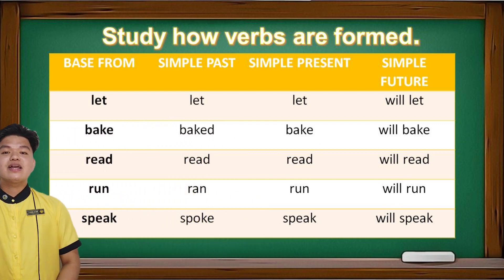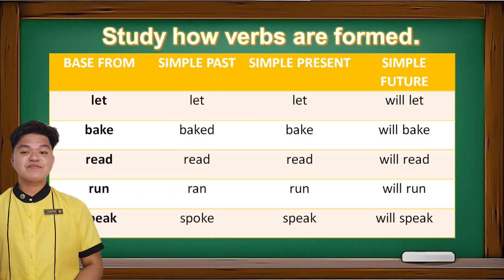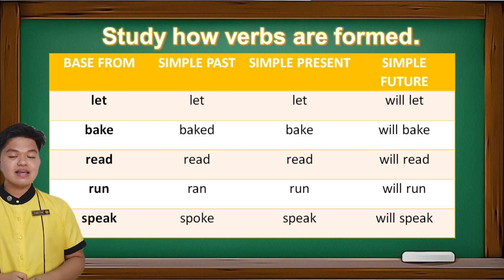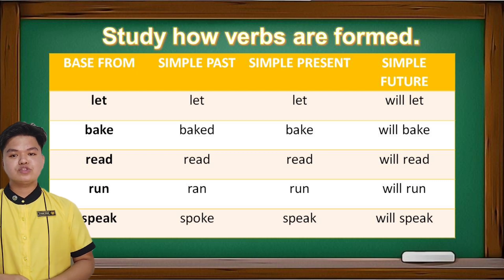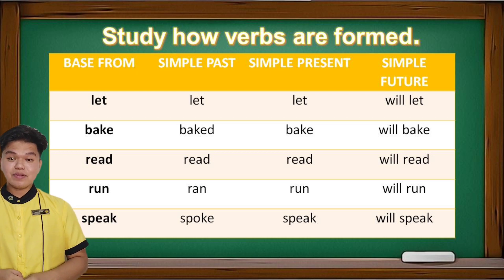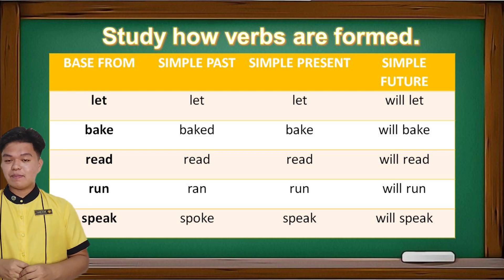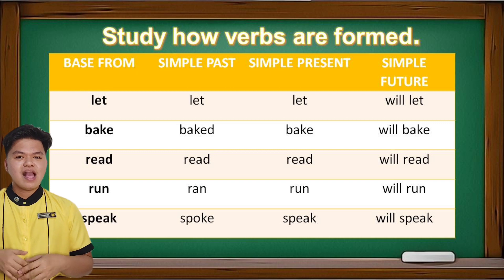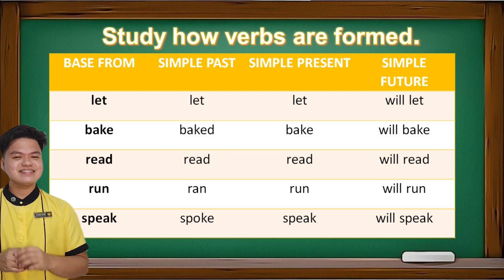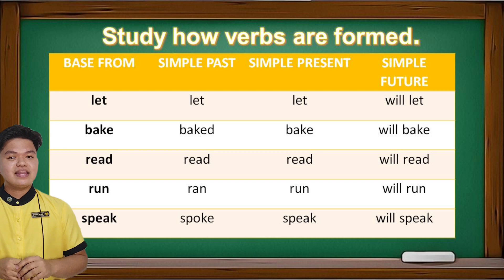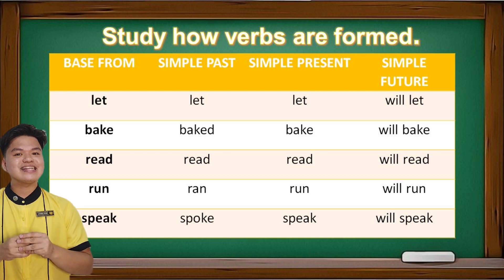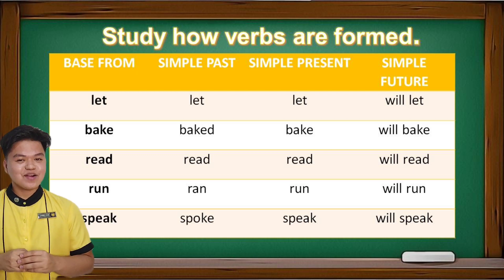As you can see here, we have a table. You will study how verbs are formed. We have here: base form, simple past, simple present, and simple future. For example, the word 'let' — its simple past is 'let,' simple present is 'let,' and simple future is 'will let.' Now look at the other words on how they are formed in different tenses.